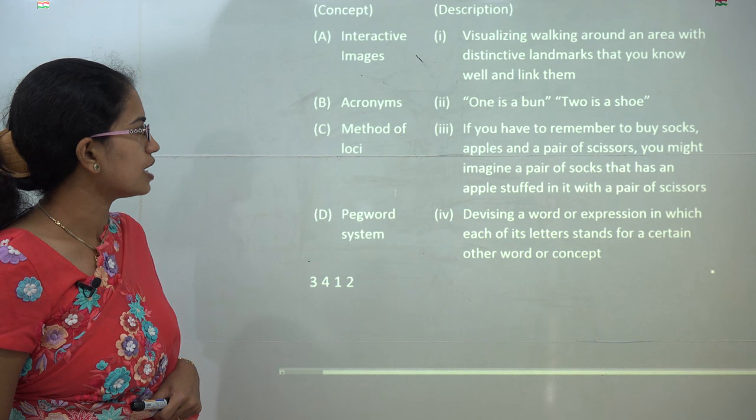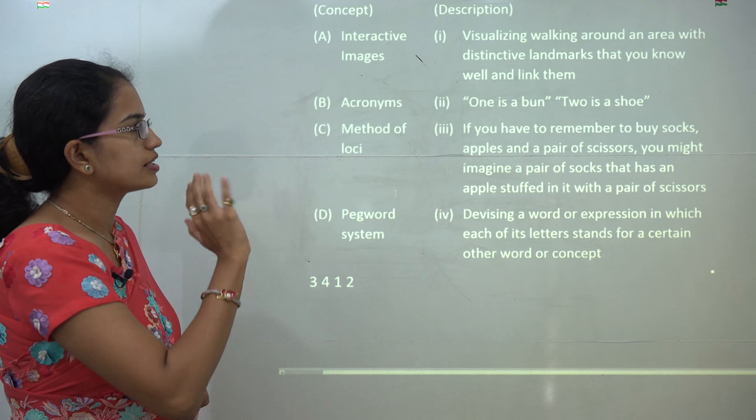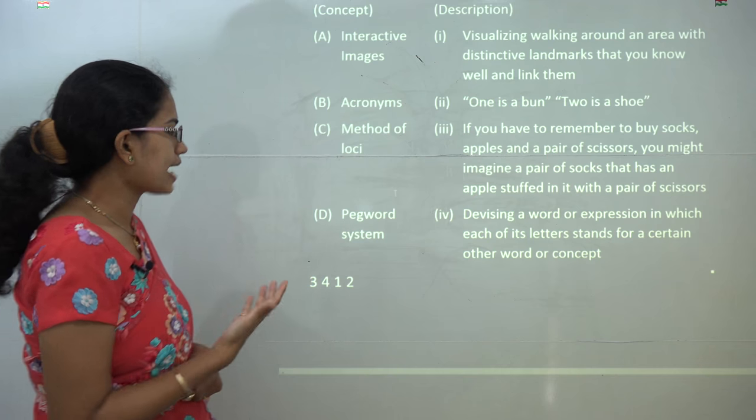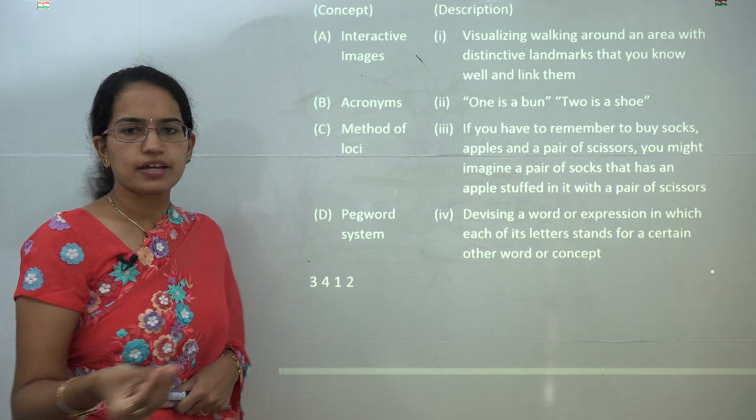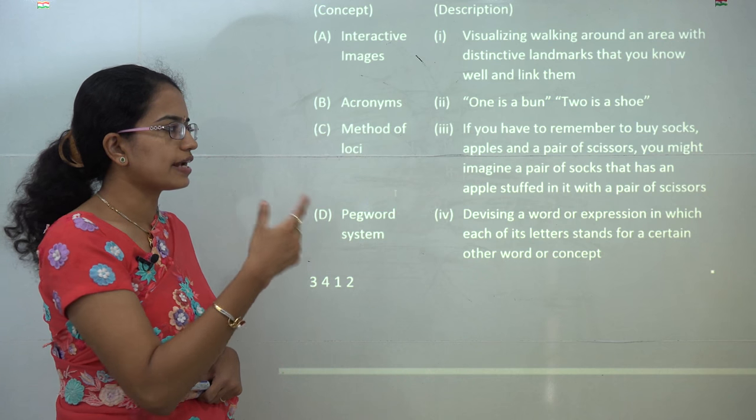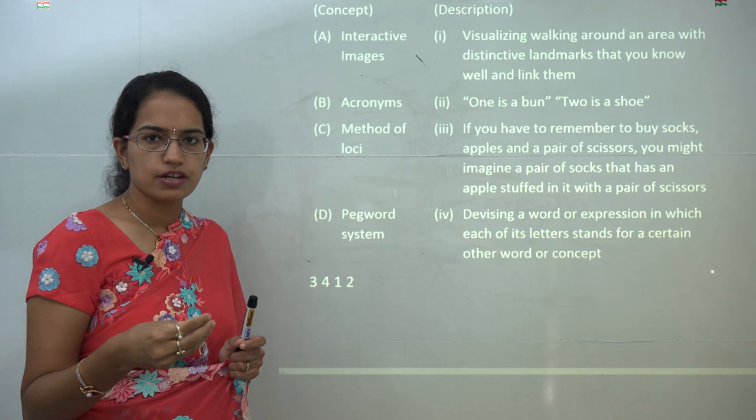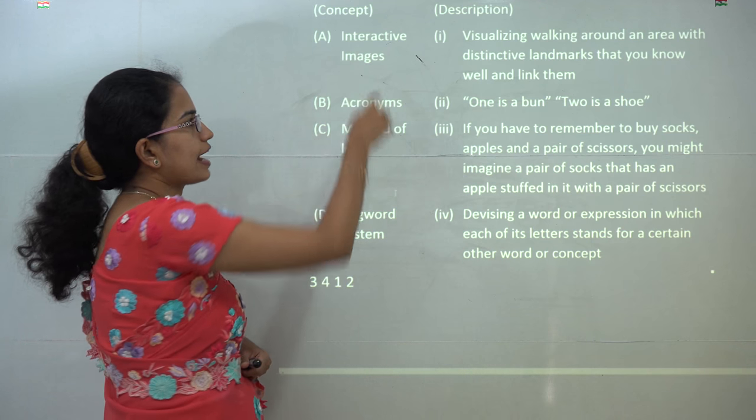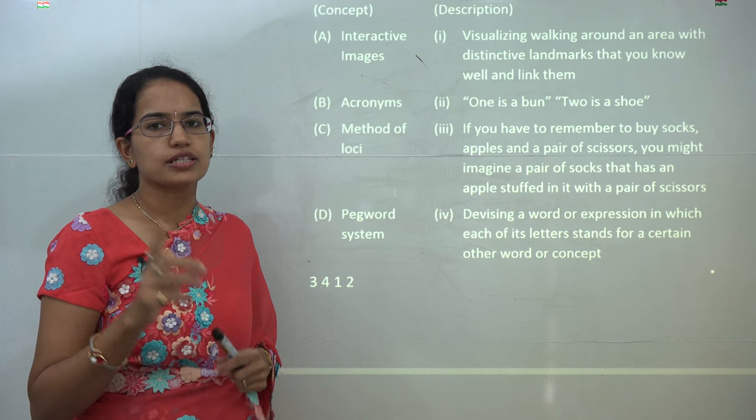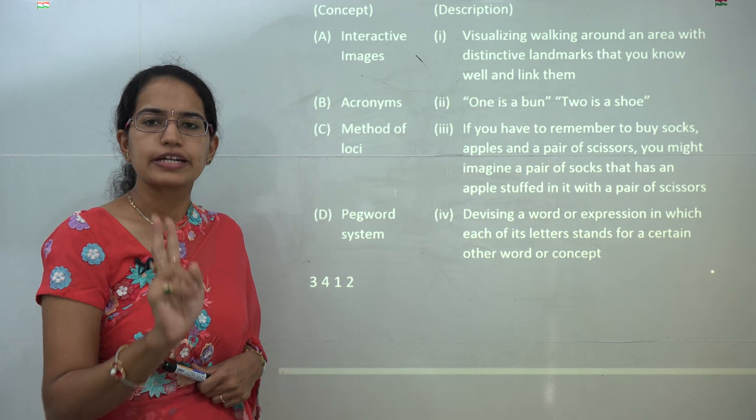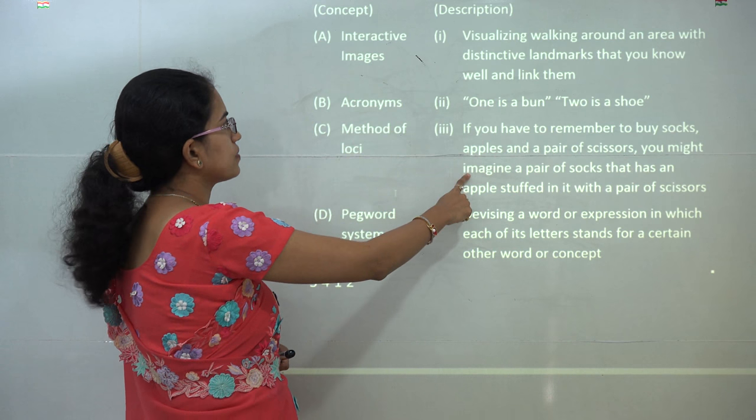The next is the concept and the description for the same. So interactive images—basically, if you have to remember to buy the socks, the pair of apples, what you might do is you might imagine a pair of socks with an apple stuffed within the pair of socks. So that is an interactive image. You are trying to buy two articles and you are trying to correlate them together so that you don't forget either of the articles and ultimately buy both the articles. So that is interactive images.